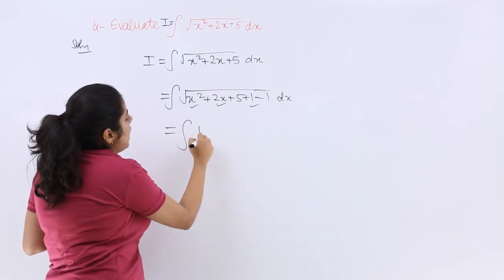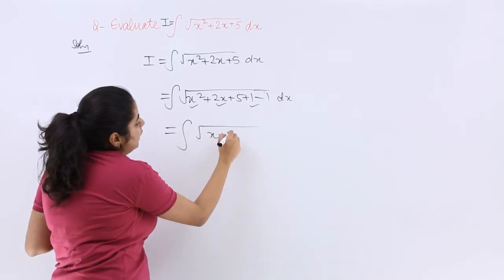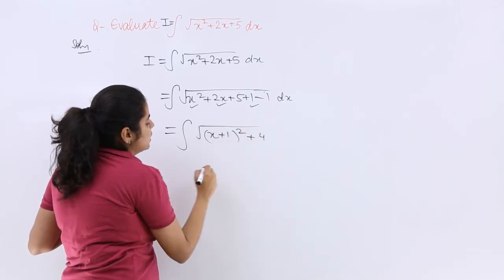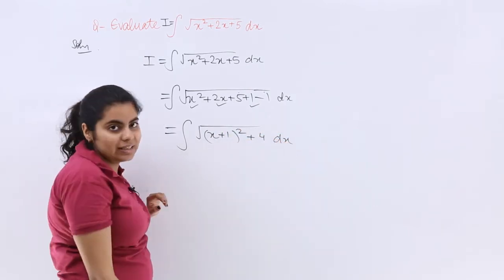So (x + 1)² plus 5 minus 1 is 4, dx is already there.